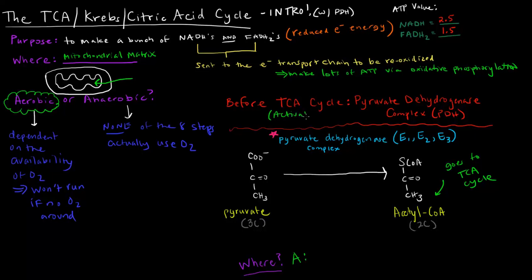We need to activate pyruvate before it can go to the TCA cycle. So this reaction is catalyzed by the pyruvate dehydrogenase complex. And the reason why it's called a complex is because there's actually three different sort of enzymes that all work together to get this complex process to work.